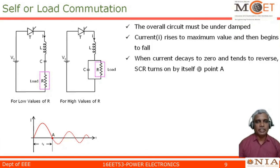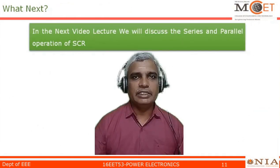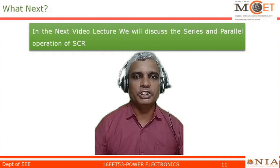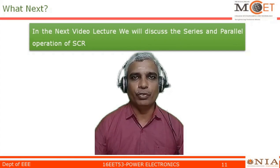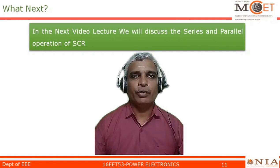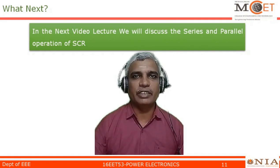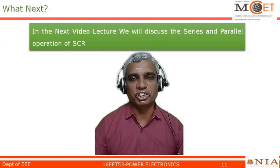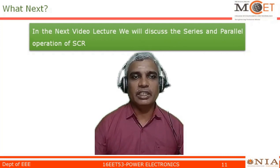In this video, we have discussed what is the meaning of commutation and its types. There are generally two methods: natural commutation and forced commutation. Natural commutation is used only when the input supply is AC; forced commutation circuits are used only when the input supply is DC. In forced commutation, there are five methods from Class A to Class E, and in this lecture we have covered only Class A. In the next session, we will see about the series and parallel operation of SCR. Thank you for your patient listening.